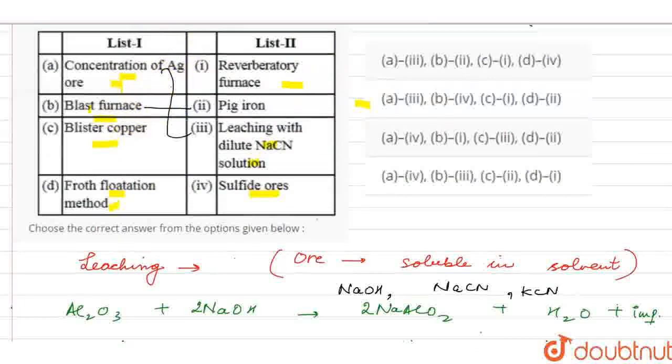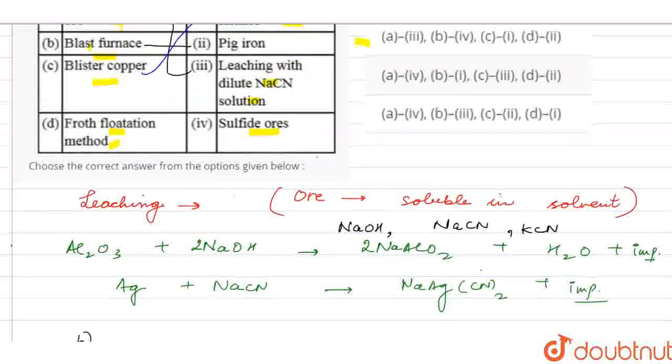Next, let's talk about blister copper. So, what is blister copper? It is melted in a reverberatory furnace and it is stirred with the poles of green wood.